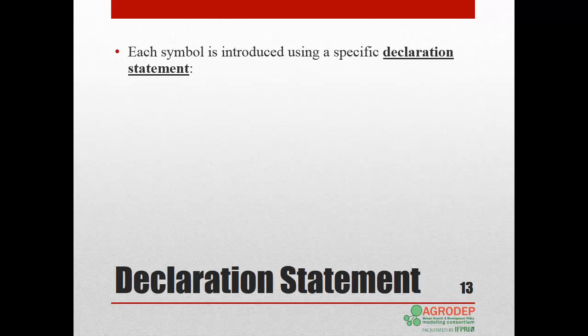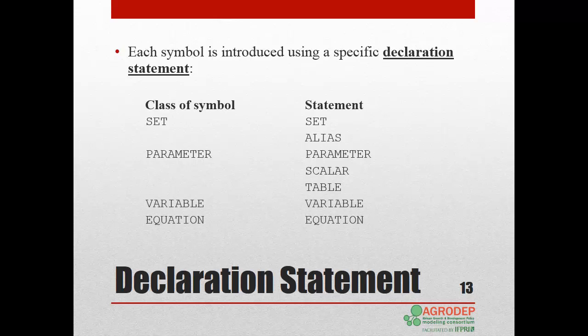Each symbol is introduced by using a specific declaration statement. In the following table, we will list the various symbols on the left and the corresponding statements on the right. Set has for statement set. Alias is a statement that declares different names for a previously declared set. The symbol parameters has for statement parameter. Or scalar if the parameter has zero dimension. Or table if the parameter has two or more dimensions. And so on.